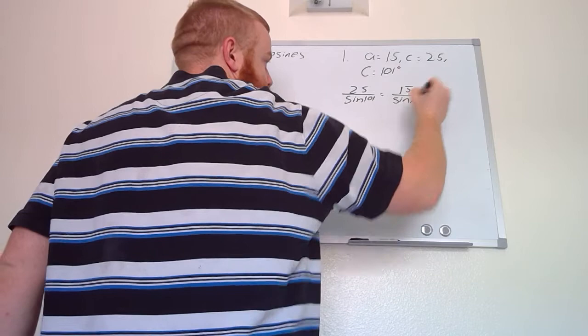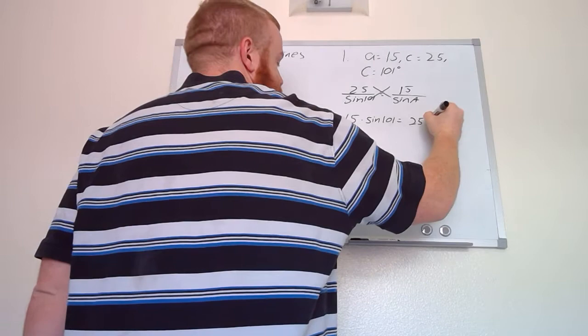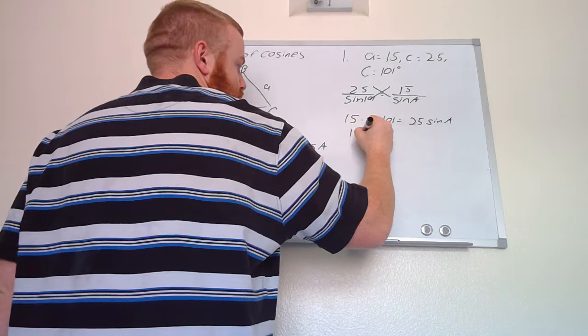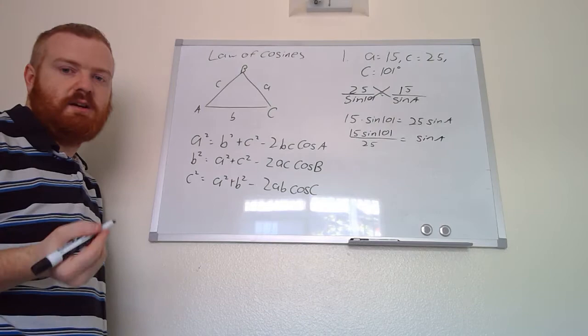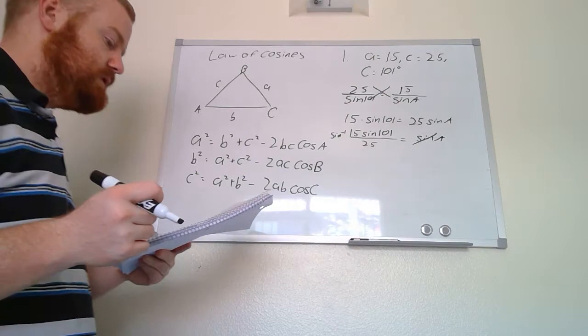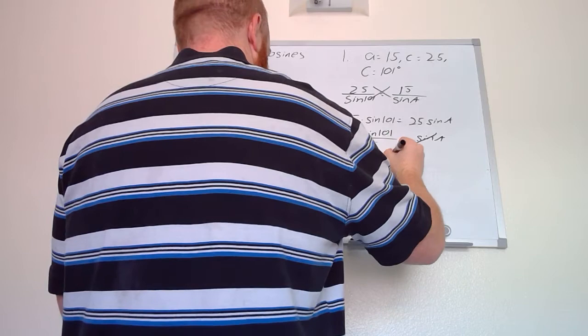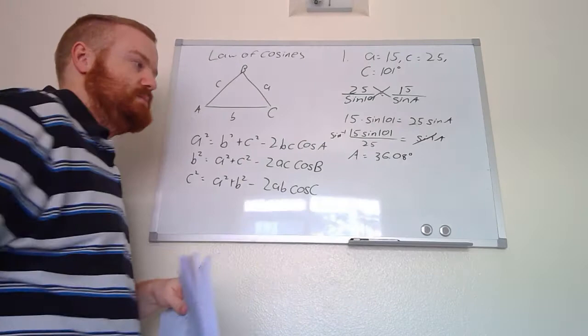We have side a, so that goes on top, meaning we solve for angle A: sine(A) goes on the bottom. Cross-multiplying gives 15·sin(101°) = 25·sin(A). Dividing by 25 gives sin(A), and then to get A by itself — since A is inside the sine — we take the inverse sine. In the calculator we do sin⁻¹(15·sin(101°) / 25) and get angle A ≈ 36.08°.